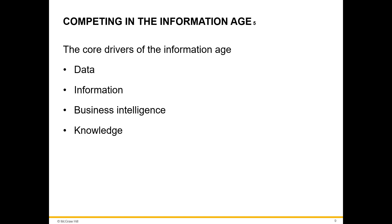Data are raw facts that describe the characteristic of an event or object. Information is data converted into a meaningful and useful context. Business intelligence is information collected from multiple sources such as suppliers, customers, and partners, and analyzed to find patterns, trends, and relationships for strategic decision making. Knowledge includes the skills, expertise, and experience coupled with information and intelligence that create a person's intellectual resources and understanding.